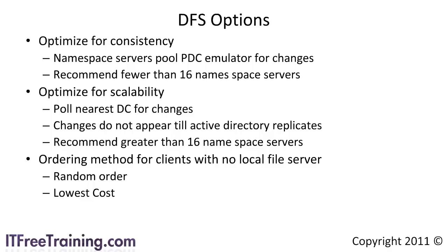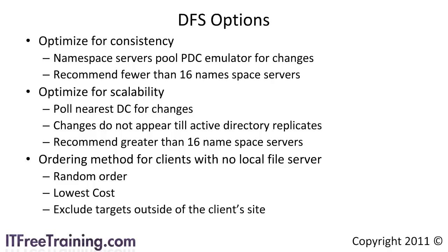With the previous example of a software share, you may not want end users having access to a software share that is not in their local site. For example, you may create a local software share in every site, but if that server were not available, you don't want them performing installs of large software programs over the WAN. To prevent this from happening, you can choose to exclude targets outside of the client's site. Selecting this option will mean if the local server is not available, the client will need to wait until the server is back online before it will be able to access the file share. This prevents the client from accessing the data over the WAN link.